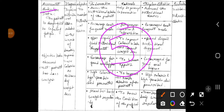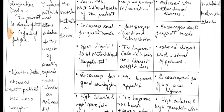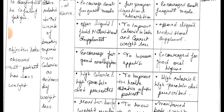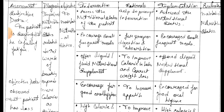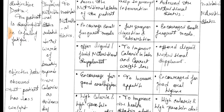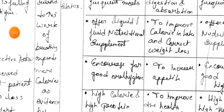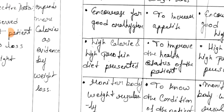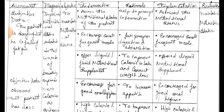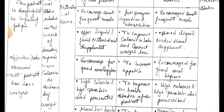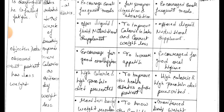Care plan five — assessment, diagnosis, objective, intervention, rational, implementation, and evaluation. Subjective data: the patient is feeling fatigue. Objective data: observe the patient for weight loss. Diagnosis: impaired nutritional status related to increased workload of breathing and expending more calories as evidenced by weight loss.